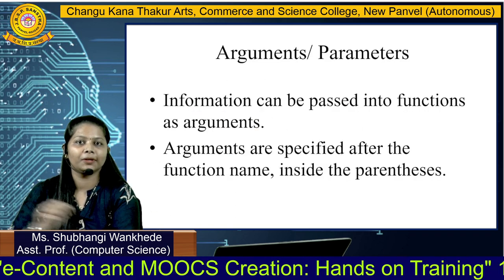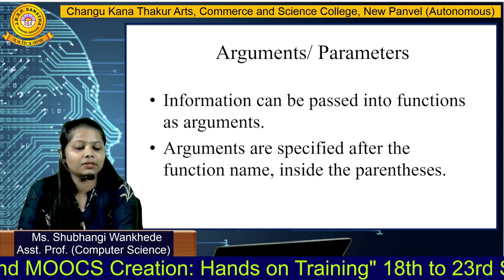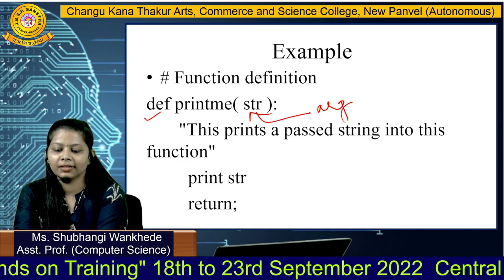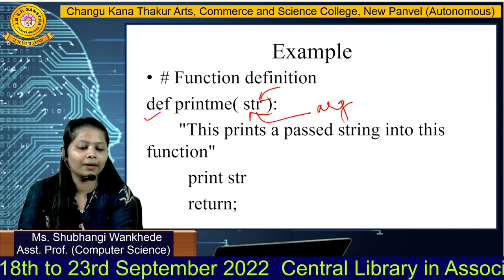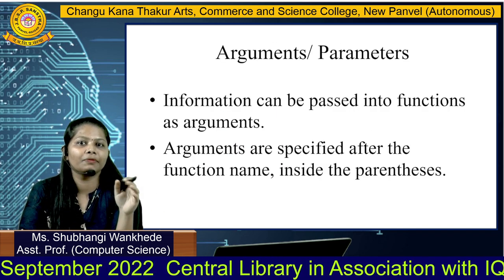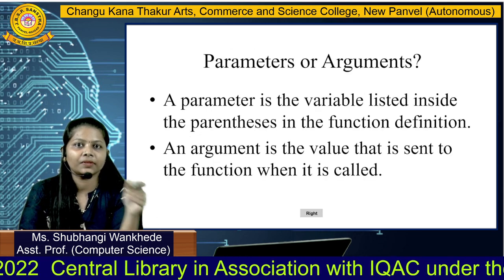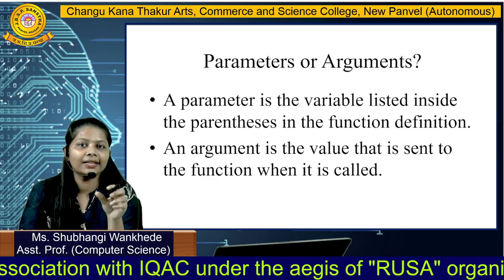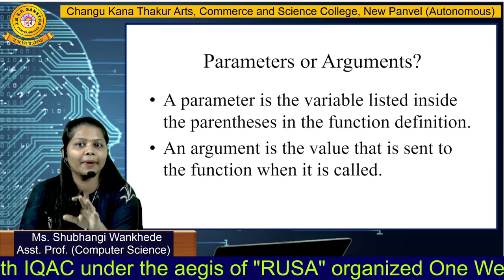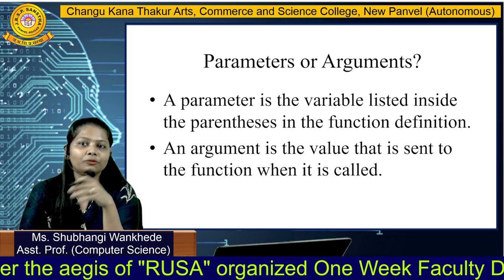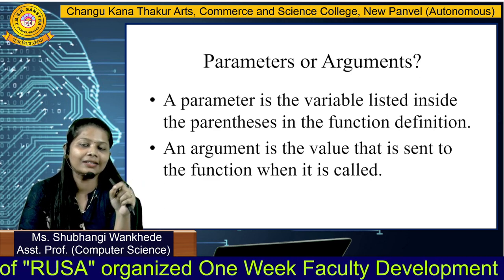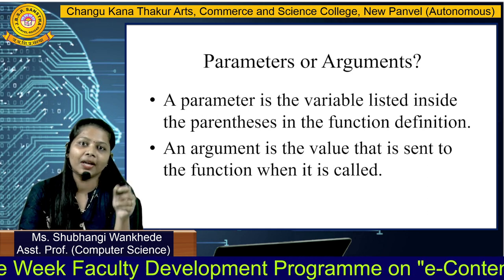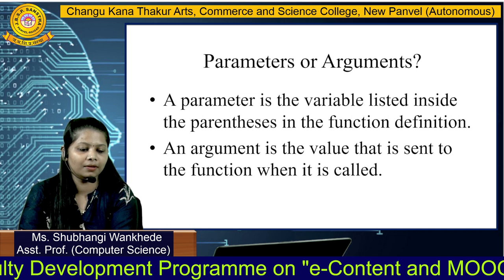What are arguments and parameters? Whenever we pass something to the function, that thing is called an argument or parameter — but there is a distinction. The parameter is the variable which is listed inside the parenthesis in the function definition. In our example, 'str' is the parameter. The argument is the actual value passed — for example, if I write my name 'Shubhangi' in place of str, that will be called the argument. So, the parameter is the variable name and the argument is the actual value.